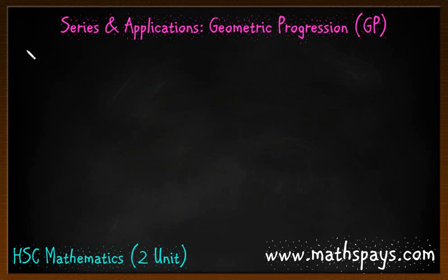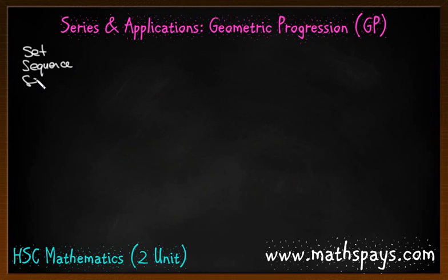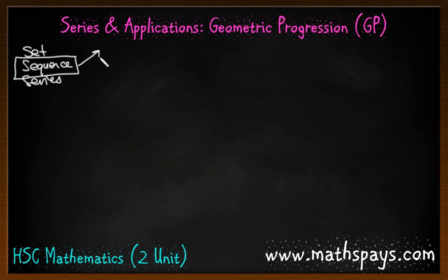So far we've looked at the three S's: we looked at having a set, we looked at what a sequence was — a sequence was basically an ordered set — and of course we had the series, which was the sum of the sequences. Once again we're going to be looking at sequences, but this time slightly different: we're not going to be looking at arithmetic, we're going to be looking at geometric.